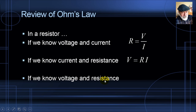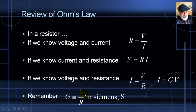And finally, if we know the voltage and the resistance, we can determine the current as I = V/R. That expression can also be written as I = G·V, where G is the conductance — the inverse of resistance — measured in Siemens, uppercase S. This is simply another expression of Ohm's Law: the current is proportional to the voltage across the resistor.